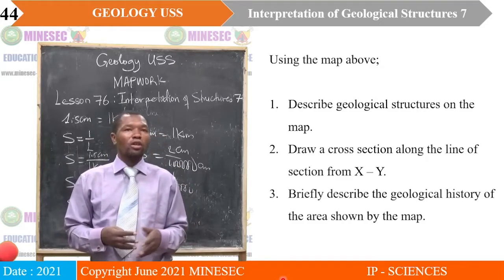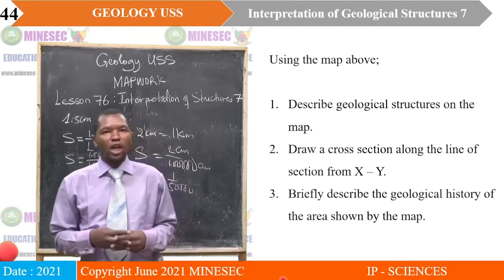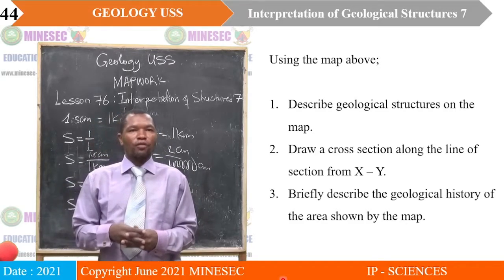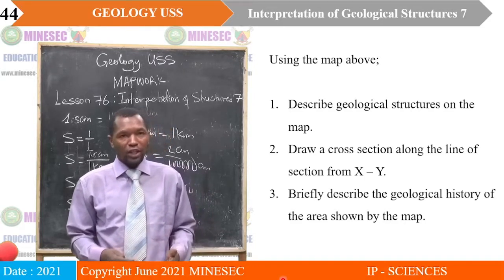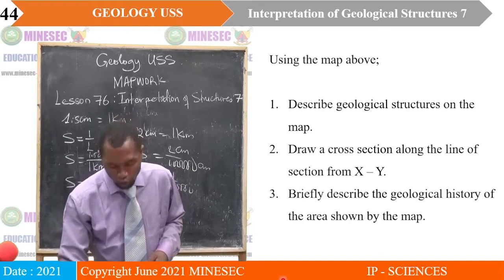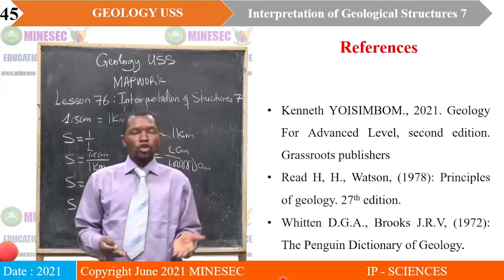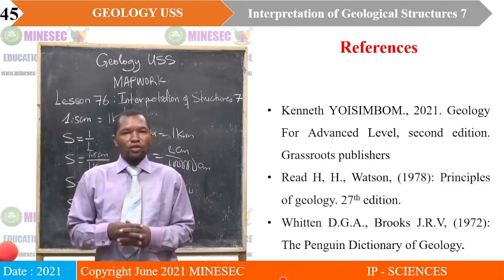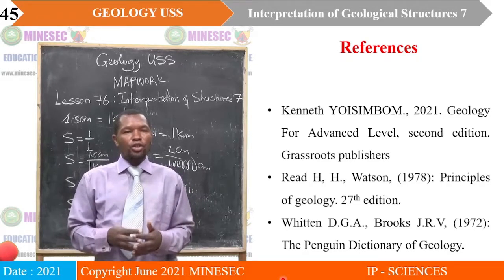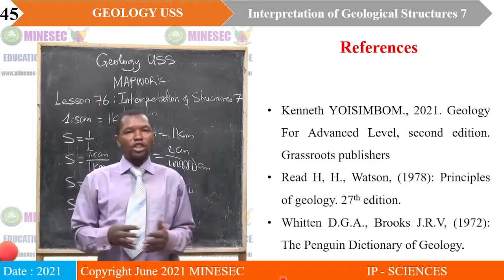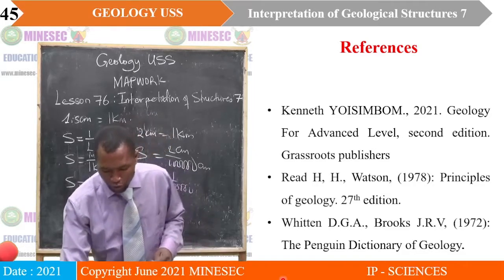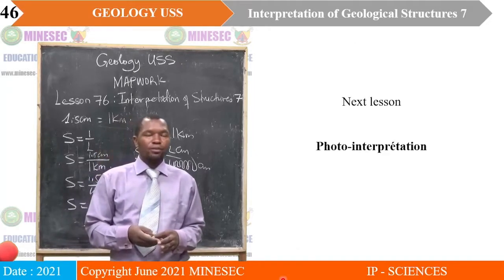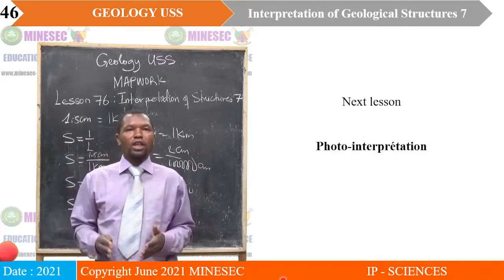For the assignment, using the map provided: describe the structures on the map; draw a cross section along the line of section from X to Y; and briefly describe the geological history of the area shown by the map. You can use the textbook 'Geology for Advanced Level — The Fundamentals of Geology' to assist you in understanding the lesson on interpreting geological structures on maps and to help with your assignment. We have come to the end of our lesson. Our next lesson will be on photo interpretation. See you in our next class.